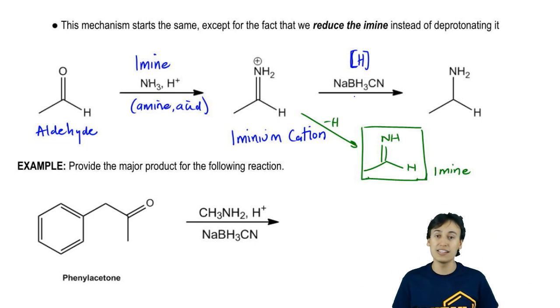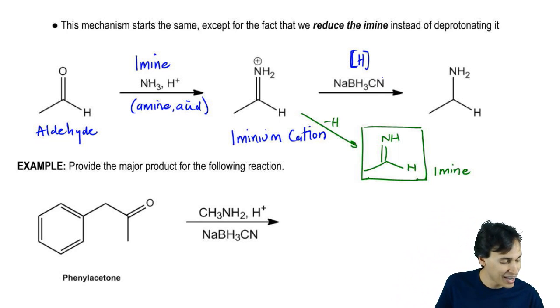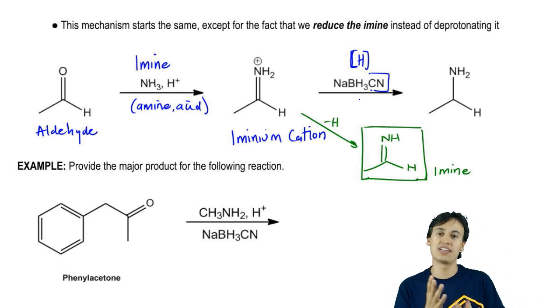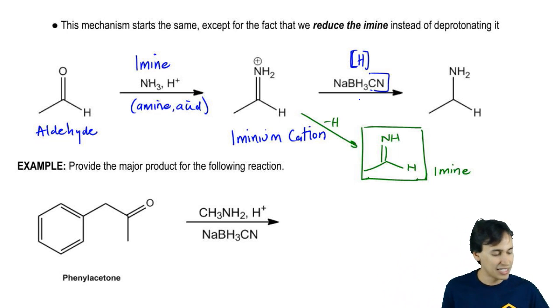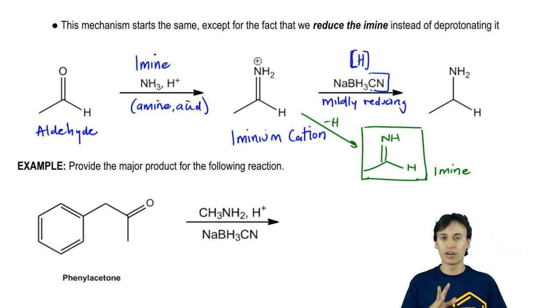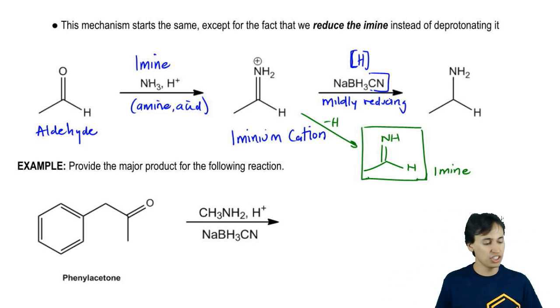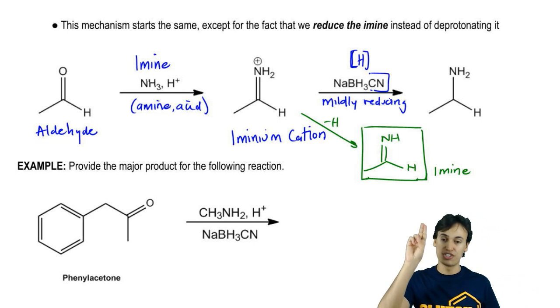This is going to be basically sodium borohydride or NaBH4. Notice that it's almost the same as NaBH4, but it has a cyano group on it, CN. Now what the CN is going to do is it's an electron withdrawing group, so it's going to make the sodium borohydride a little bit less strong of a reducing agent. This is actually going to be mildly reducing. Since it's mildly reducing, I don't have to worry about getting any kind of weird byproducts. All it's going to do is it's going to add hydrogens to the double bond.